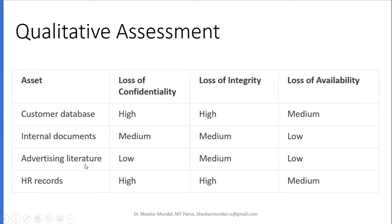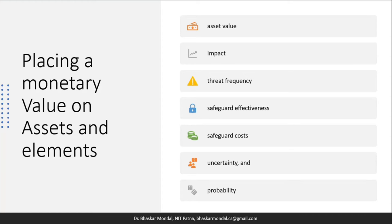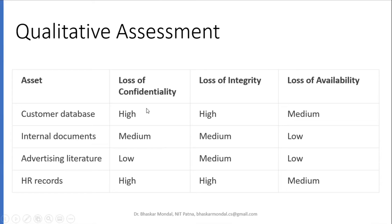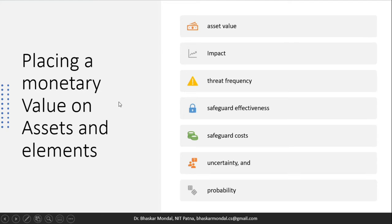So this is how we quantify things, but we have to find out how it can be converted to monetary values based on these parameters — low, medium, high, and all these things. Now, placing a monetary value on the asset and its elements — so asset value.